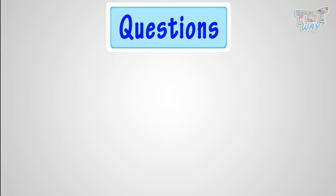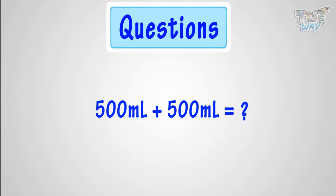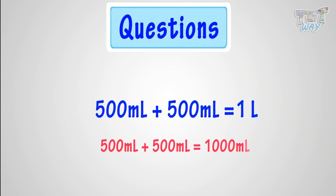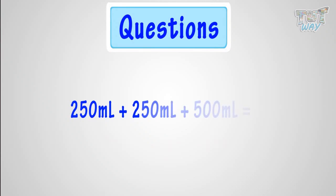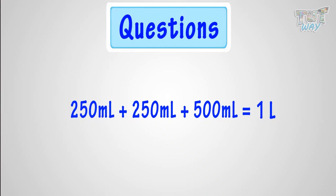Good. Now, 500 milliliters plus 500 milliliters makes how many liters? It is 1,000 milliliters, as 500 milliliters plus 500 milliliters is 1,000 milliliters. Now, 250 milliliters plus 250 milliliters plus 500 milliliters is how many liters? It is again 1 liter, as it adds up to 1,000 milliliters.